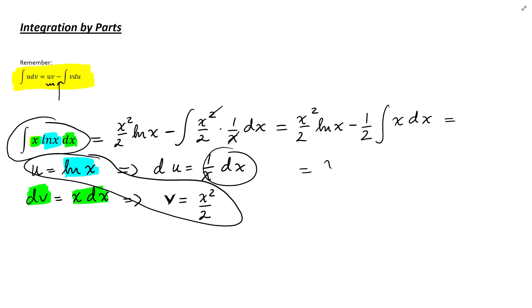We get x squared over 2 ln x minus 1 over 2, integral of x dx, which is x squared over 2, and then plus c because it's an indefinite integral. So we get x squared over 2 ln x minus 1 over 2, or x squared over 4 plus c, and this is our final answer.